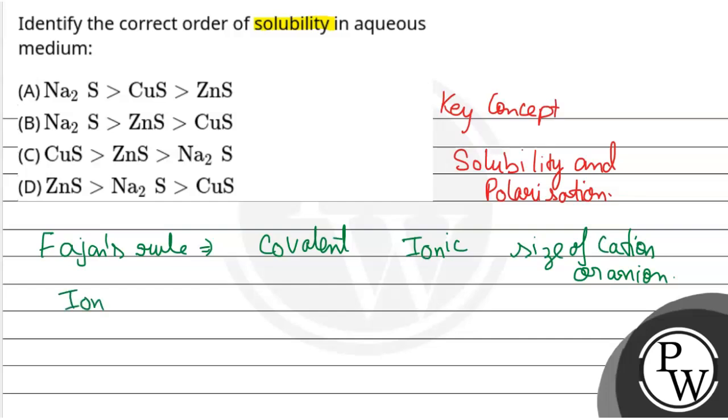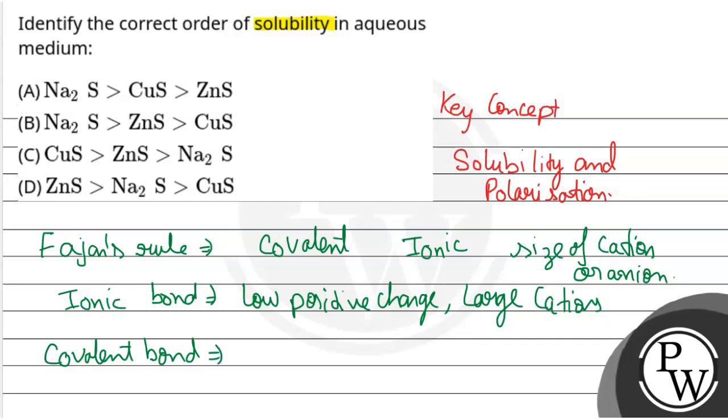Ionic bond versus covalent bond. The covalent bond condition is high positive charge and small cations. So, this condition we will not consider.